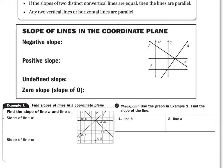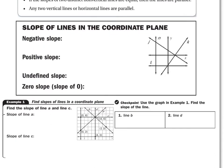Let's look at identifying slopes of lines in a coordinate plane. We have to figure out which slopes are negative, positive, undefined, and zero. Negative: going from left to right, you're going down — it looks like a downward slant. Positive slope: from left to right, you're going up the mountain. Slope is going in a positive direction or a negative direction — you're either going up or down the mountain.